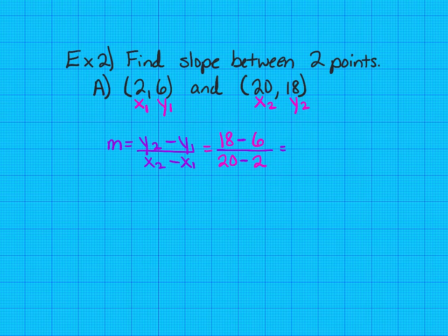Let me just simplify this. 18 minus 6 is 12. 20 minus 2 is 18. And 12 over 18 will reduce. They'll both divide by 6 to get 2/3. So slope is 2/3, and we have found the slope between those two points.